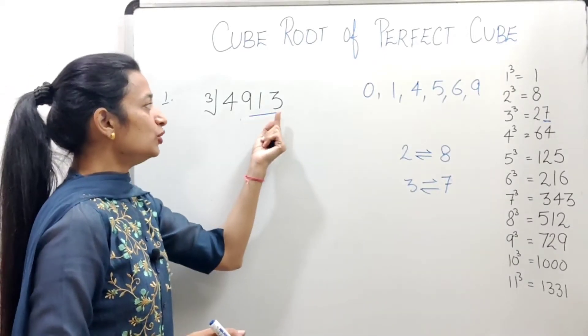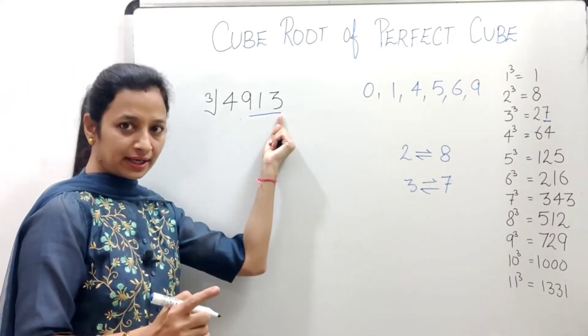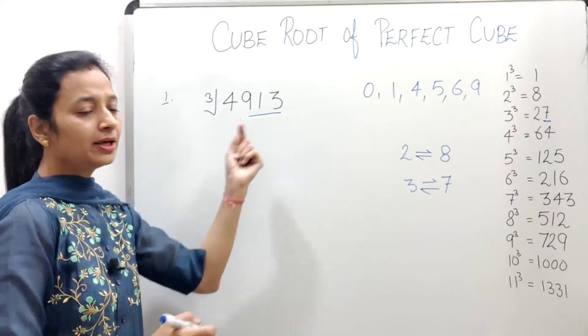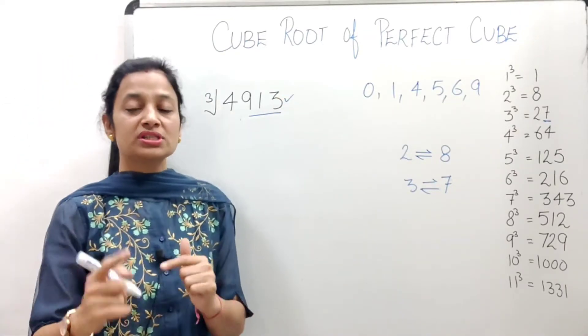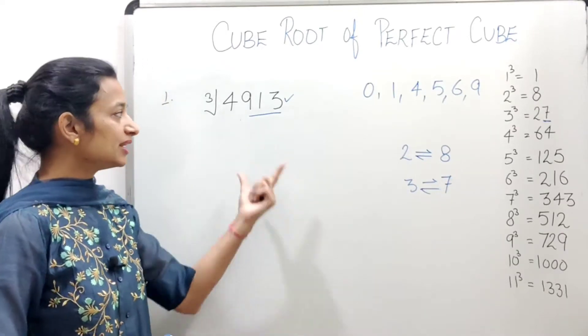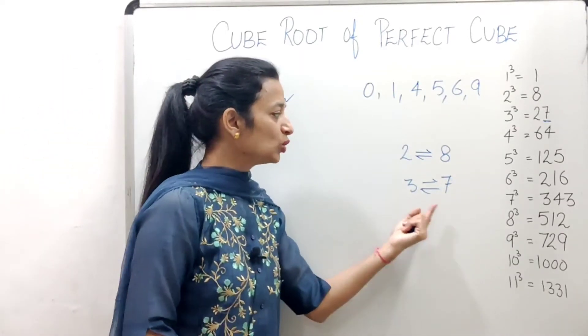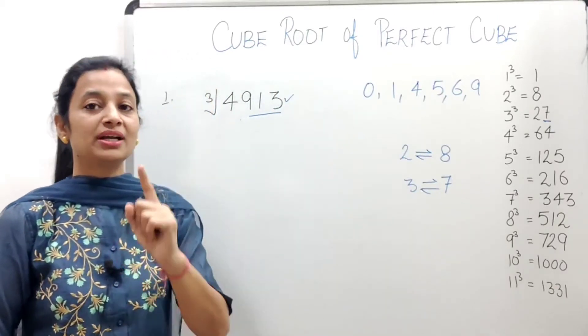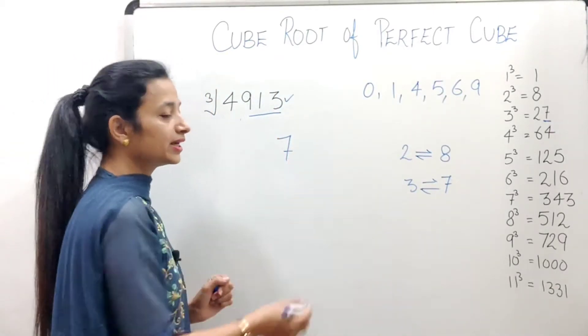Now, in this, at the unit place, what number is there? 3. What digit is at the unit place of the cube of 3? I just told you that when we cube 3, at the unit place, we get 7.